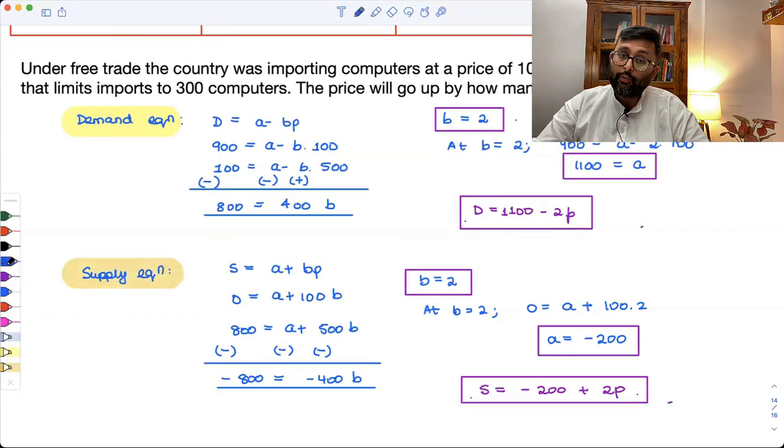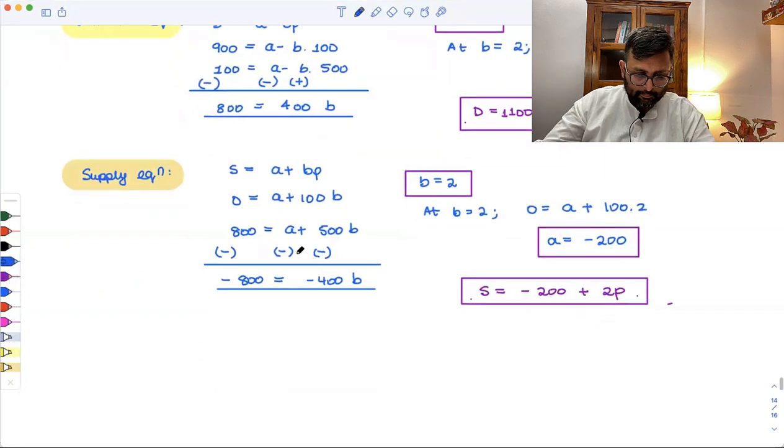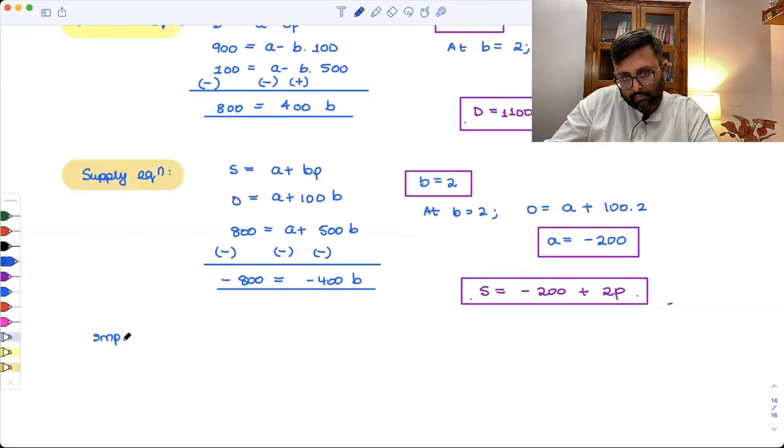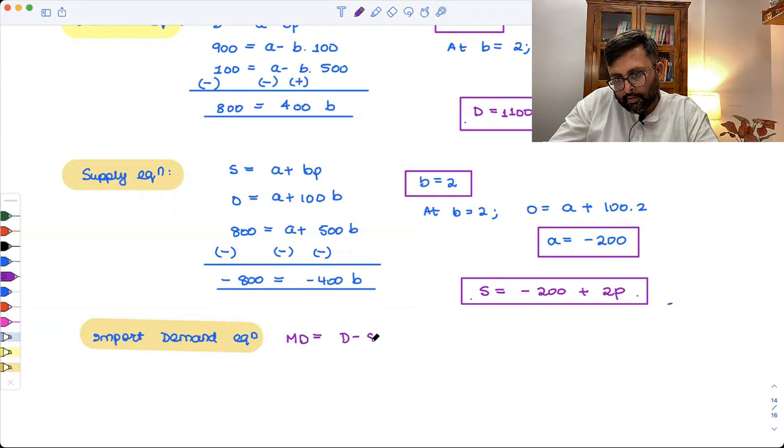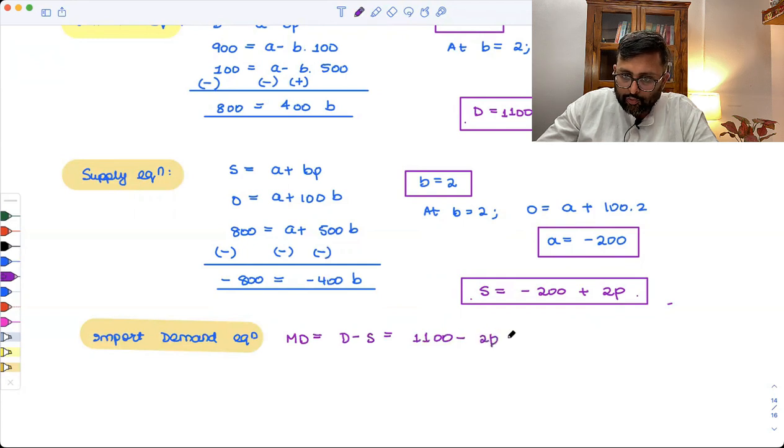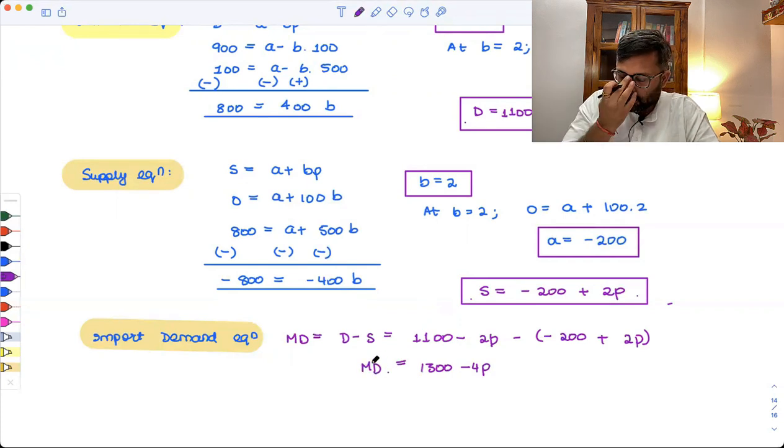So when are you going to import anything? When your demand is more than the supply. Import demand equation. Import demand is demand minus supply. What is your demand? Demand is 1100 minus 2P minus supply is minus 200 plus 2P. I have just written it like this. And once I solve this, I will be getting 1300 minus 4P. This is what my import equation is.